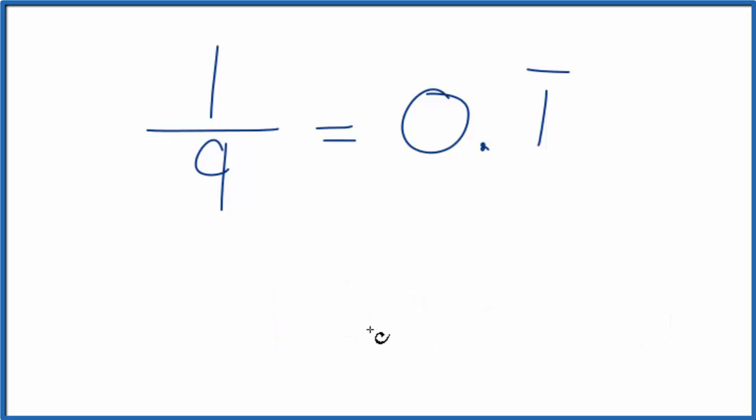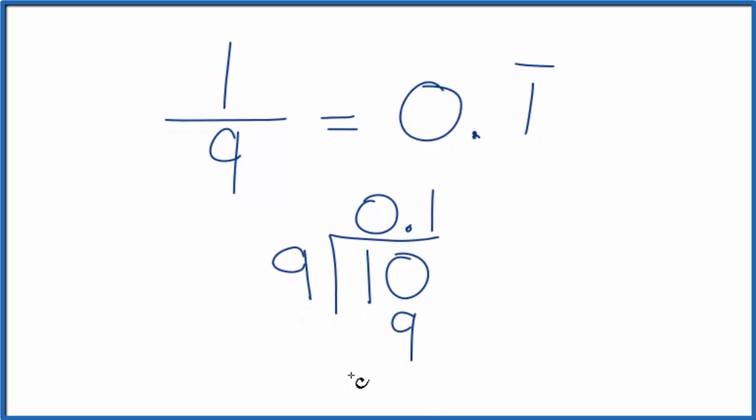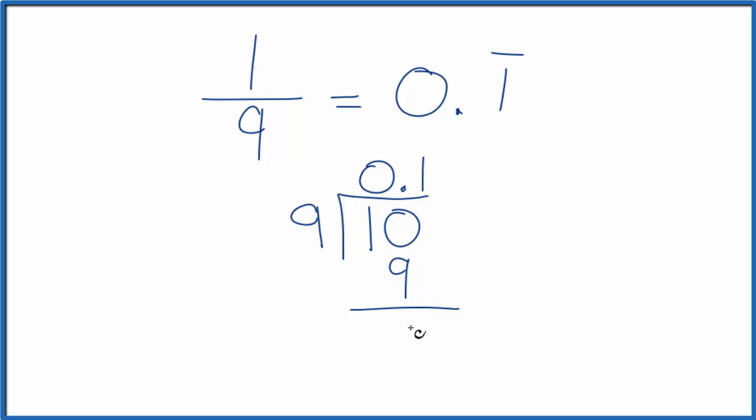So we're taking 1 and we want to know how many times 9 goes into 1. Right now it doesn't. So let's put 0 point up here. So we know 9 goes into 10 one time. 1 times 9, that's 9. So 10 minus 9, that's 1.